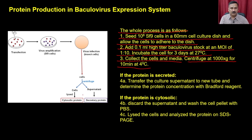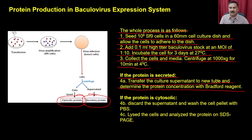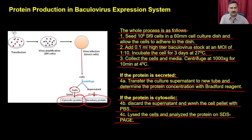In step three, collect the cells and media, centrifuge at 1000g for 10 minutes at 4°C. At this stage you have two choices: if the protein is secretory, transfer the culture supernatant to a new tube and determine protein concentration with Bradford assay. If the protein is cytosolic, discard the supernatant, wash the cell pellet with PBS, lyse the cells, and analyze the protein on SDS-PAGE. So if the protein is cytosolic you lyse the cells and check expression by SDS-PAGE; if secretory you collect the supernatant, which contains the secreted protein, and also check it on SDS-PAGE.